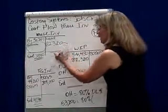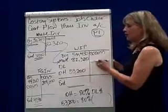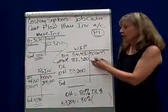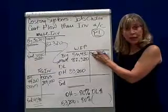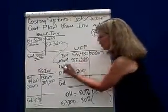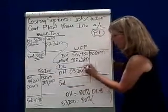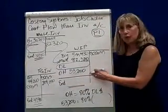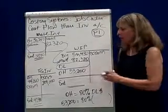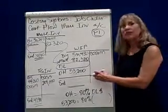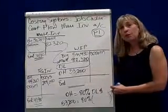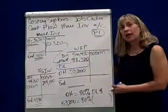That $82,320 then flows over into work in process as a debit, along with beginning work in process of $56,480. We don't know what direct labor is, but we do know that overhead is $53,200. Here's the other thing we know: overhead is equal to 80% of the direct labor dollars.